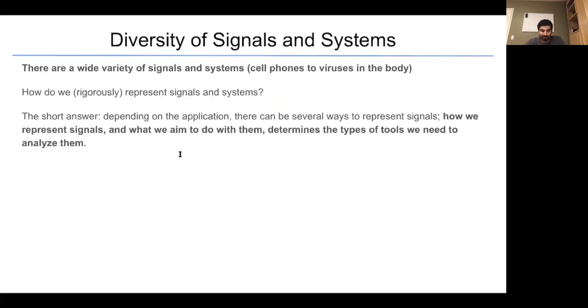As we have seen, there are a wide variety of signals and systems. We've talked about cell phones, all the way up to viruses in the human body. How do we rigorously represent signals and systems? The goal of this class is to rigorously represent signals and systems. And the short answer is, there are several ways to represent signals, all of which we will learn about. It depends on how we aim to represent them, what we want to do with them, and what sort of tools we have in our arsenal to analyze them.